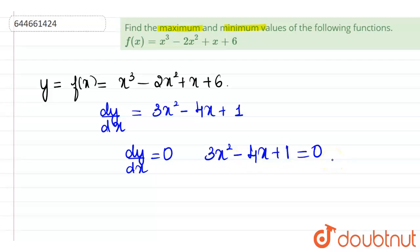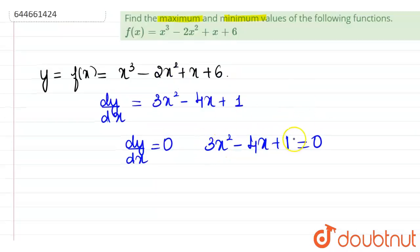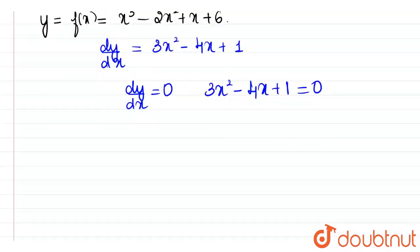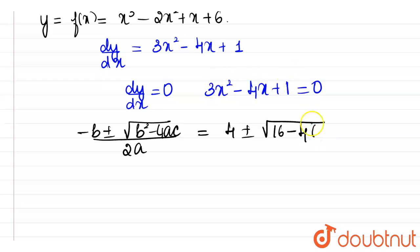Now this equation is going to give roots of the given function. Therefore, we can write this as, we can find the roots using the formula minus b plus minus root of b square minus 4ac, using this divided by 2a. So if I am using this, this will be 4 plus or minus root of b square which will be 16 minus 4 times 3 into 1 divided by 2 times a. So 2 times a will be equal to 6.